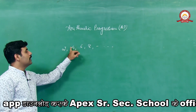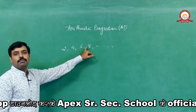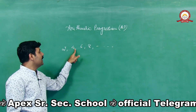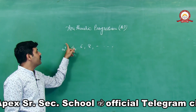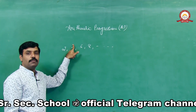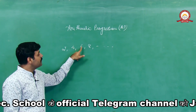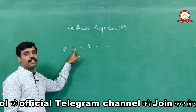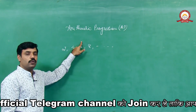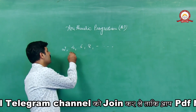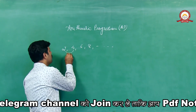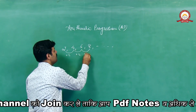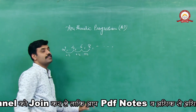तो अब आप यहाँ पे देखेंगे कि जो यह numbers हैं, यह एक particular pattern follow कर रहे हैं। जो second number है वो first number पे 2 increase होके आया है। हर बार plus 2 add होके आप next number तक जा सकते हैं — that means यह एक sequence है।